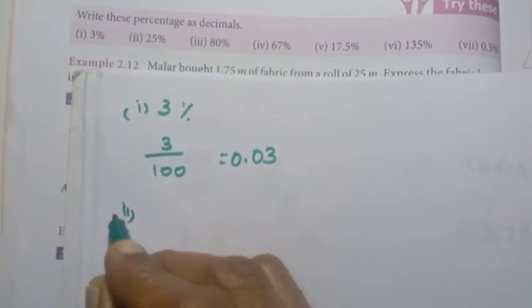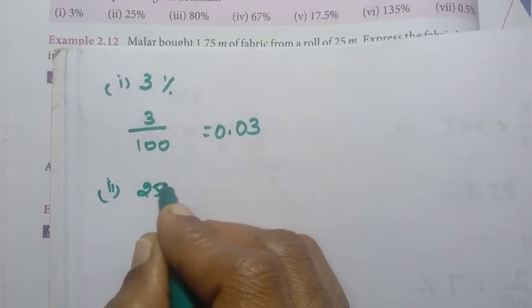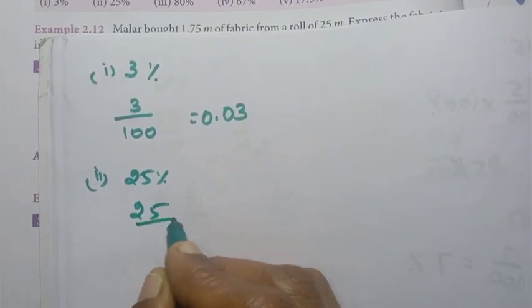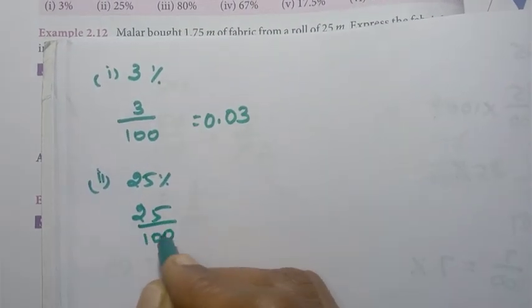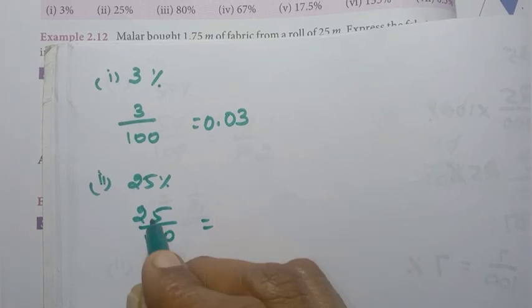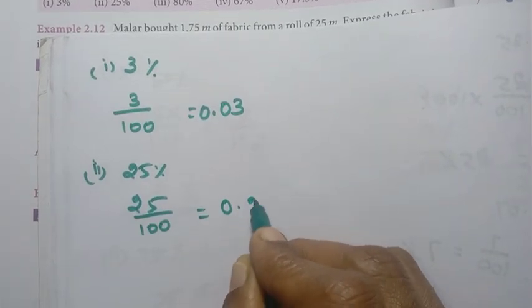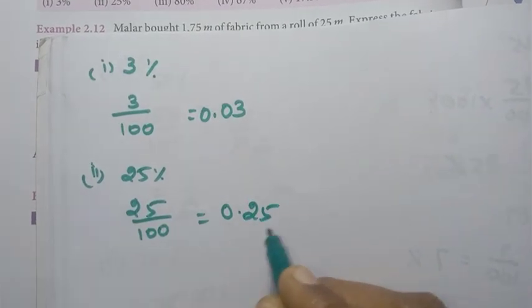Second one: 25%. So 25 by 100 equal to. Already 2 places. 0.25 decimal.